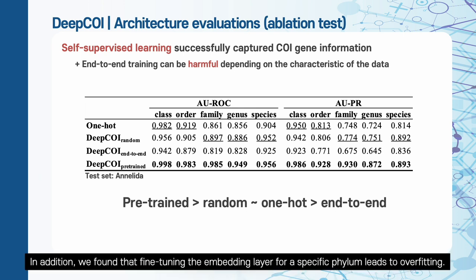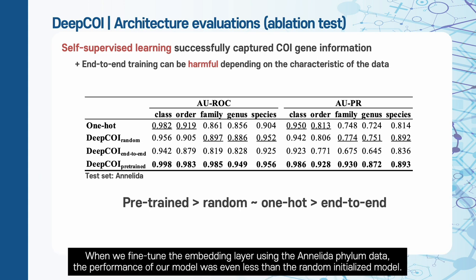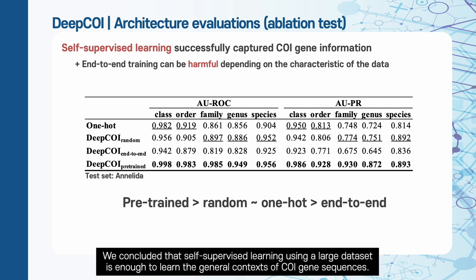In addition, we found that fine-tuning the embedding layer for a specific phylum leads to overfitting. When we fine-tuned the embedding layer using the arthropod phylum data, the performance of our model was even less than the randomly initialized model. We concluded that self-supervised learning using a large dataset is enough to learn the general context of COI gene sequences.